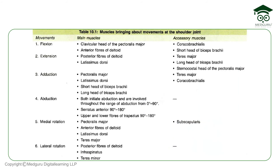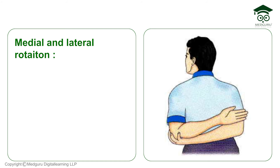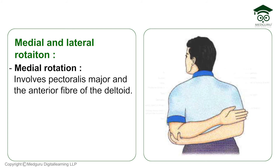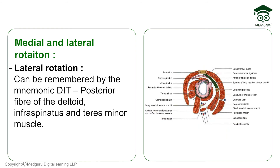Abduction is performed by the rotator cuff muscles, deltoid, serratus anterior, and trapezius. For medial rotation, the same muscles that cause flexion are involved — pectoralis major and the anterior fibers of deltoid. For lateral rotation, remember the posterior relations DIT — posterior fibers of deltoid, infraspinatus, and teres minor — these three muscles perform lateral rotation.